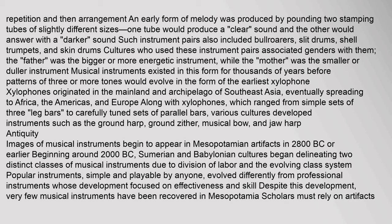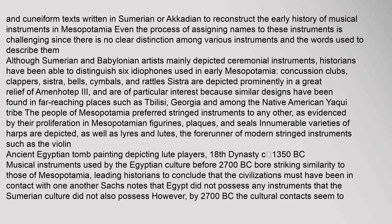Images of musical instruments begin to appear in Mesopotamian artifacts in 2800 BC or earlier. Beginning around 2000 BC, Sumerian and Babylonian cultures began delineating two distinct classes of musical instruments due to division of labor and the evolving class system. Popular instruments, simple and playable by anyone, evolved differently from professional instruments whose development focused on effectiveness and skill. Despite this development, very few musical instruments have been recovered in Mesopotamia.